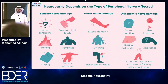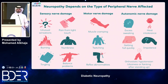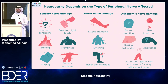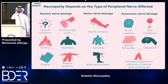Symptoms vary according to the type of nerve damaged. Sensory nerve damage causes burning sensation, tingling, numbness, and sensory ataxia. Motor nerve damage eventually leads to weakness, but initially presents with cramps and twitching. Autonomic nervous system damage produces proximal hyperhidrosis, impotence, early satiety, and orthostatic hypotension.